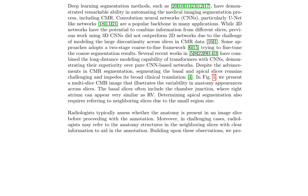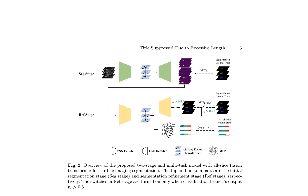Two-stage coarse-to-fine frameworks and the integration of transformers with CNNs have shown superior performance over pure CNN-based networks. The authors present a multi-slice CMR image illustrating the variability in anatomy appearances across slices, highlighting the difficulties in determining chamber junctions and apical segmentation. They observe that radiologists typically assess the presence of anatomy in an image slice before annotation and refer to neighboring slices in challenging cases. This observation forms the basis for their proposed methodology, which emulates the radiologist's annotation process.